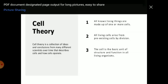Cell theory came into existence in 1838 by two German scientists, Schwann and Schleiden. The statements of the cell theory are: all living things are made up of one or more cells; all living cells arise from pre-existing cells by division; and the cell is the basic unit of structure and function in all living organisms.